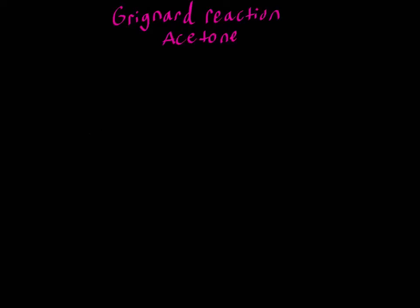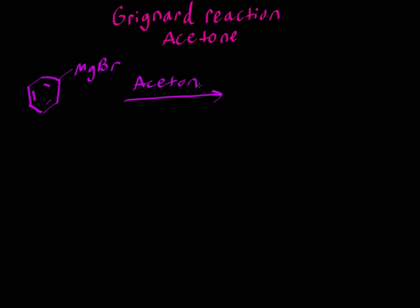In this video I'm going to show an example using the Grignard reaction with acetone. I'm going to use a Grignard reagent — a benzene ring with MgBr — reacting with acetone, using a solvent such as HCl/H2O to protonate the oxygen in the last step.